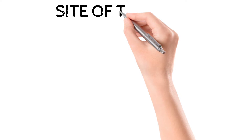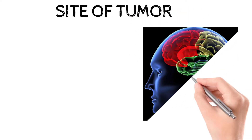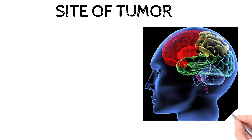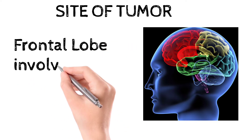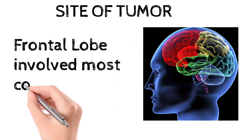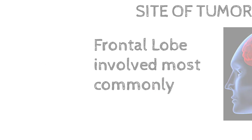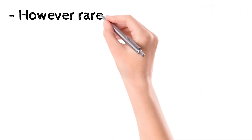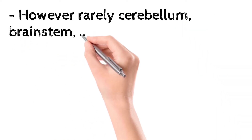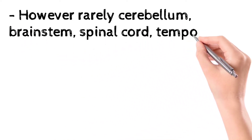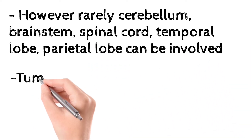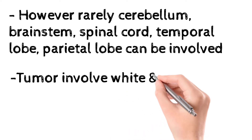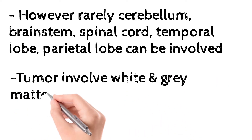The most common site of oligodendroglioma is the frontal lobe, shown in red in this diagram. However, rarely, the cerebellum, brainstem, spinal cord, temporal lobe, and parietal lobe can also be involved. The tumor involves both white and gray matter.